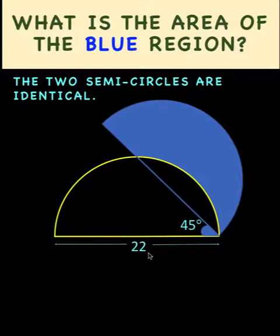It is given that the diameter of the yellow semicircle is 22 and the angle formed here is 45 degrees. We would like to find what is the area of this blue shaded region.